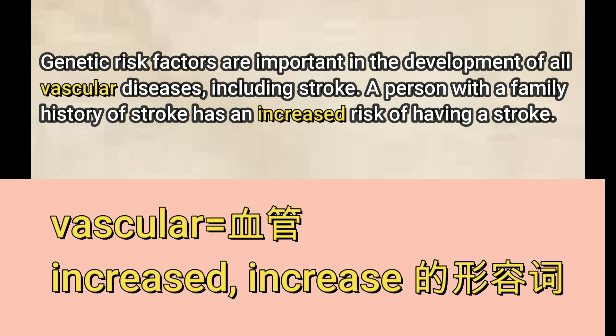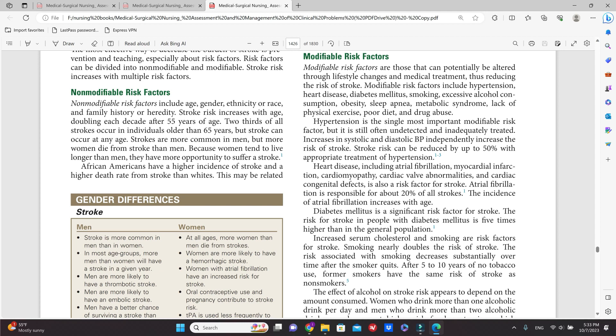Genetic risk factors are important in the development of all vascular diseases including stroke. A person with family history of stroke has an increased risk of having a stroke。这里黄色的部分，vascular就是血管的意思。前半句翻译：遗传风险因素在所有的血管疾病中的发展都起着非常重要的作用，包括中风。Increased在后面加了ed，是上升这个动词的形容词形式。有家庭中风史的人会比一般人有更多的风险来患上中风。